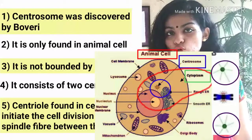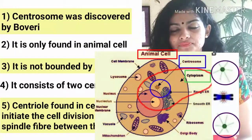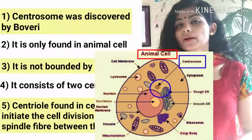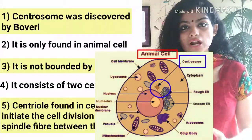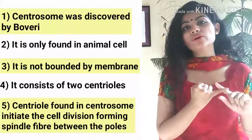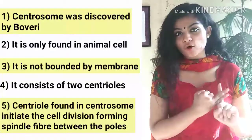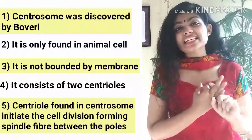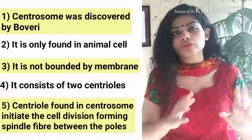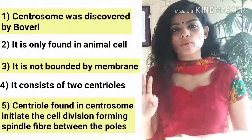Remember also that each centrosome has two centrioles, and these centrioles help in cell division. If a question asks which of the following statements are correct about centrosome: (1) centrosome is only present in animal cell, (2) centrosome is not a membrane-bound cell organelle, (3) each centrosome contains two centrioles — all of the above are correct statements about centrosome.